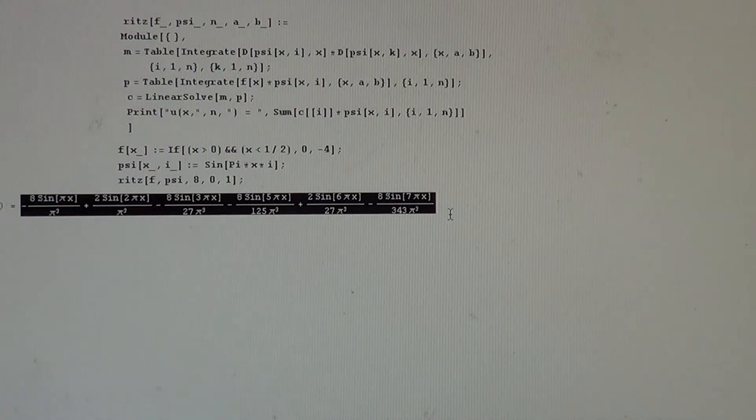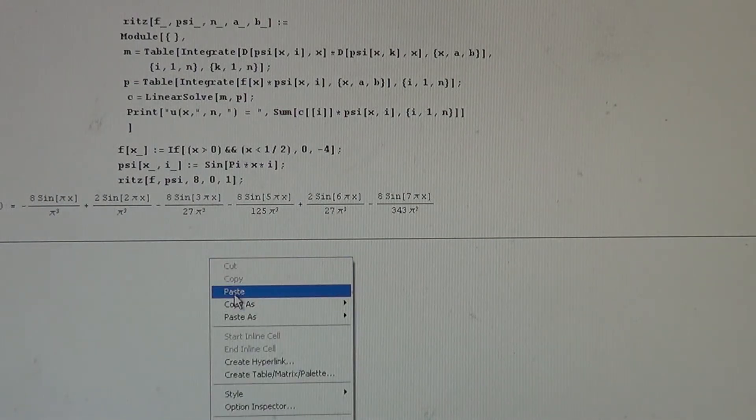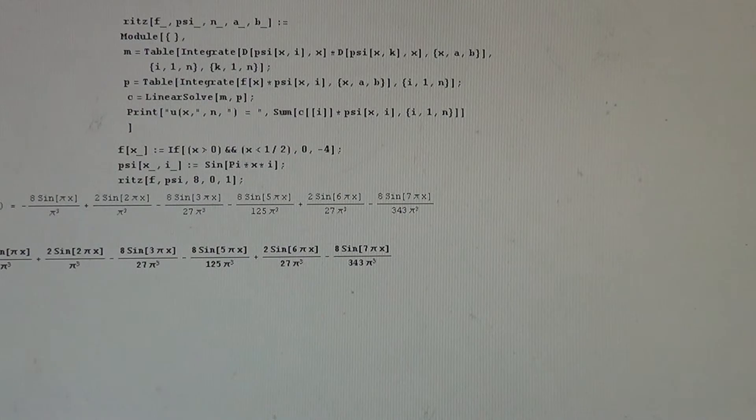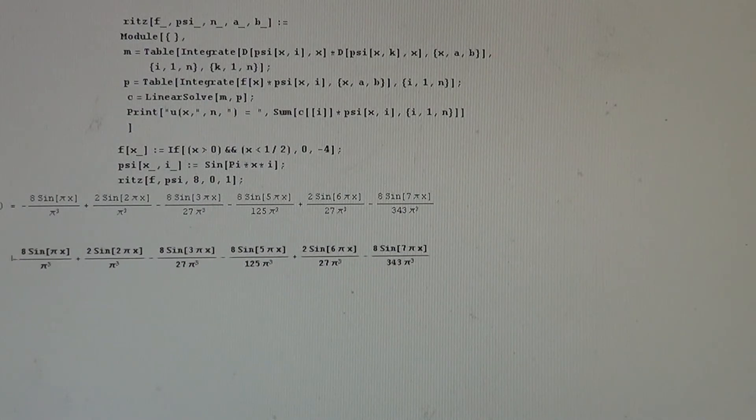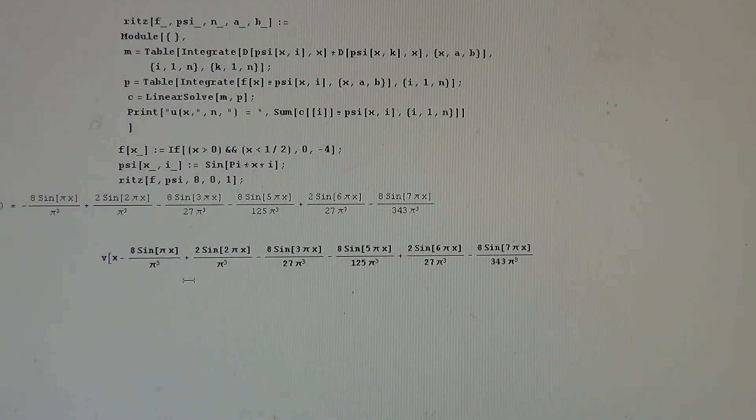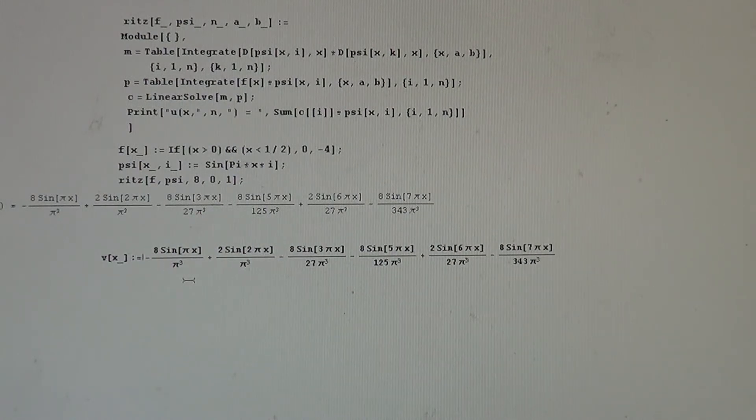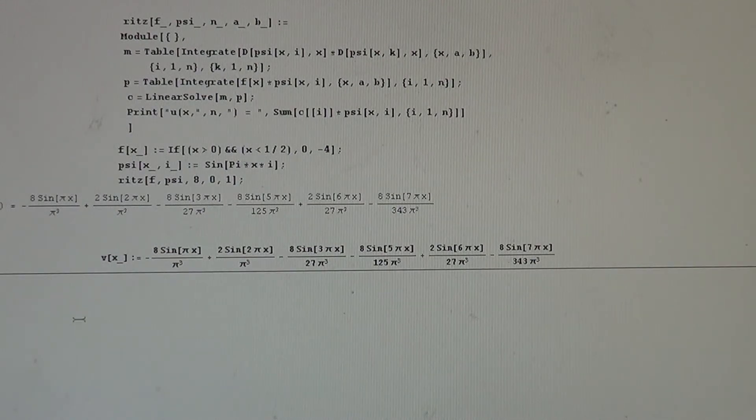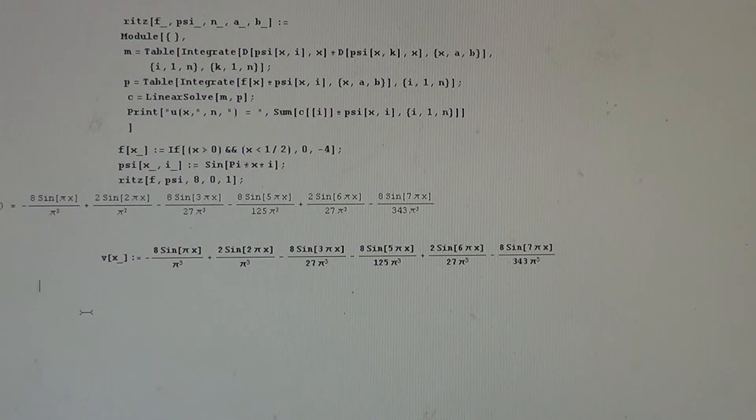Now we shall plot the module. We plot the module, and then we have to define the solution we got from the system. Let us move it on the right to see it, this is the solution we have obtained from the system. And that is V of x with the late argument, and that is the solution. Now we plot, we write the command plot,